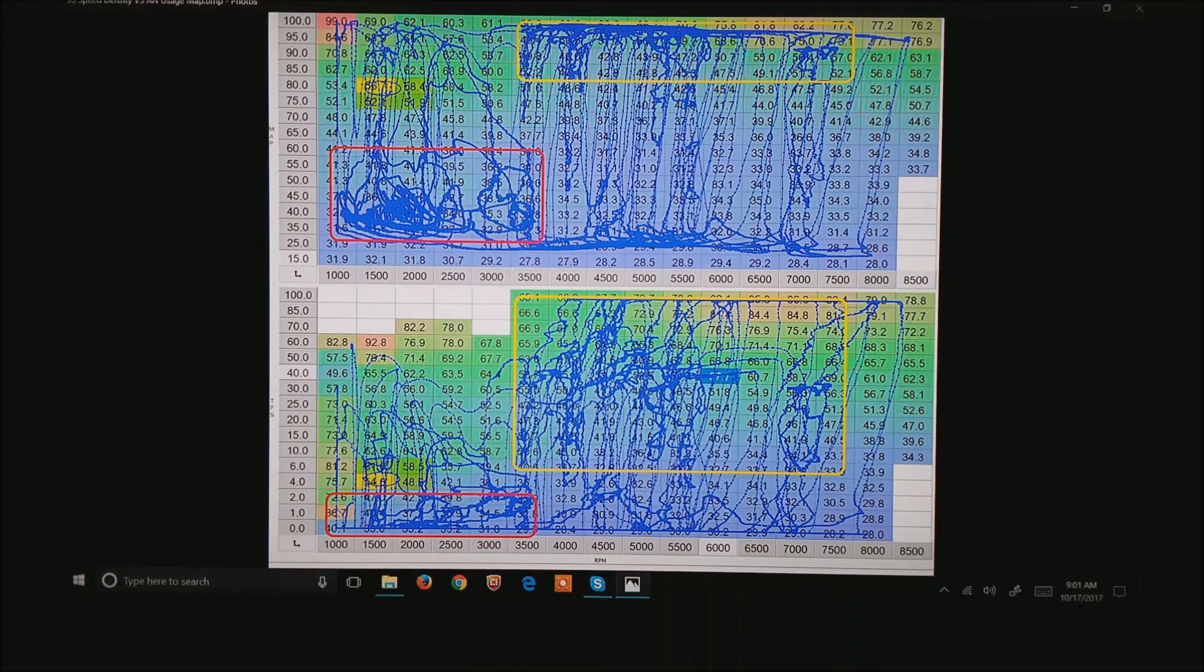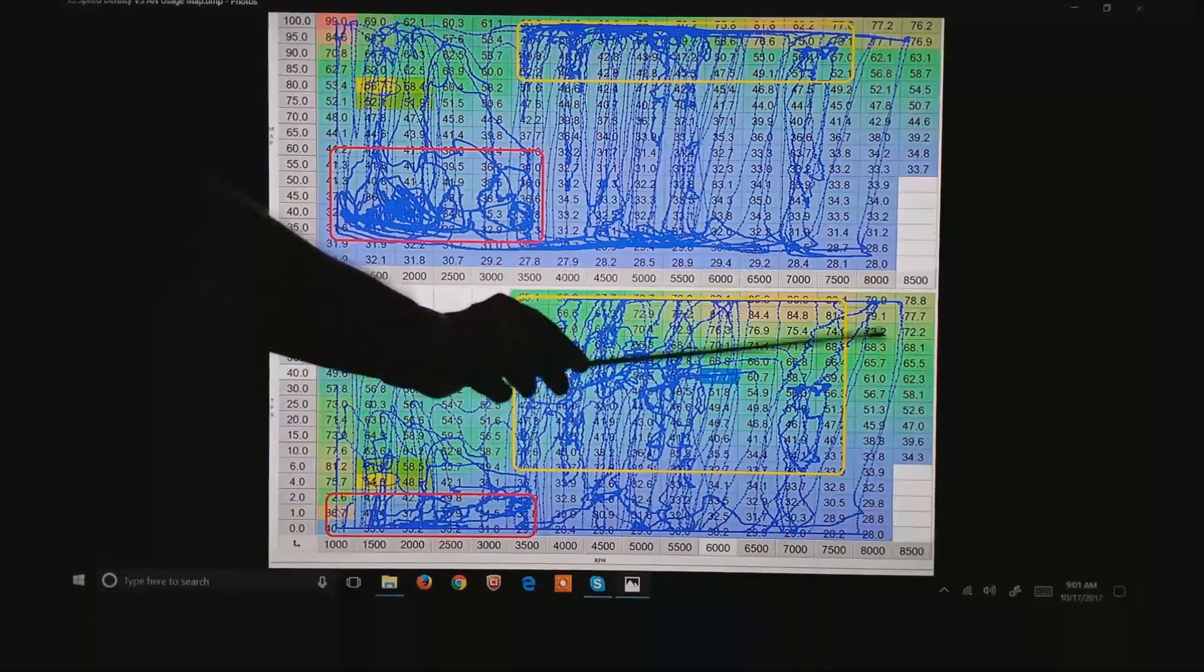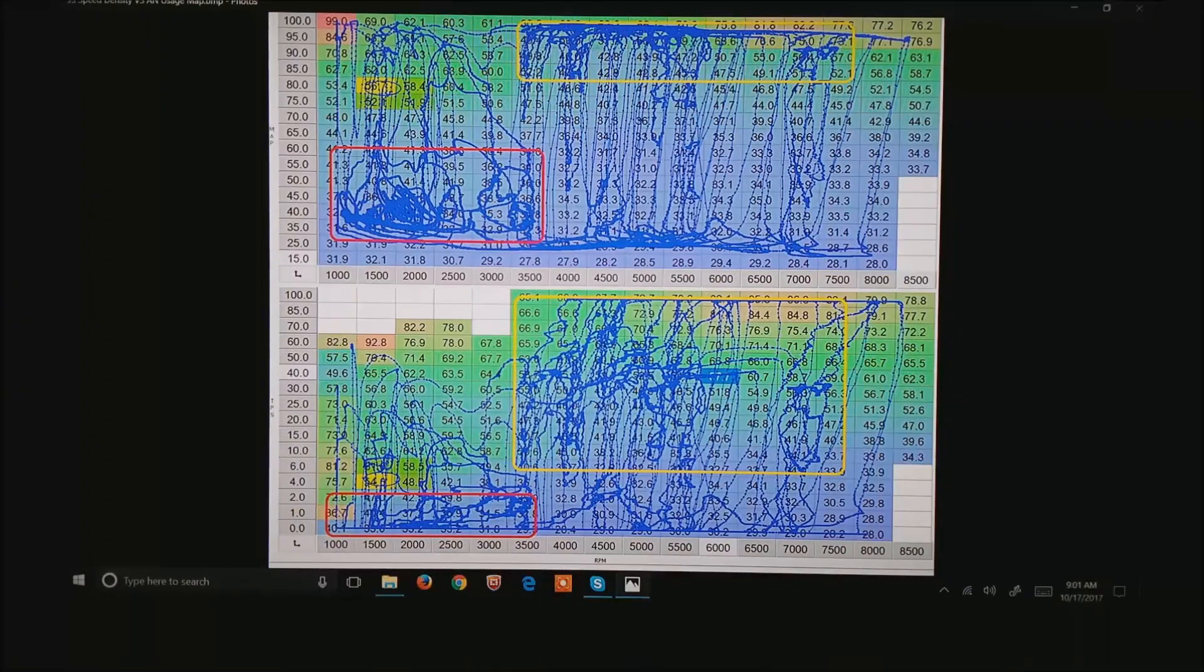But notice when we start getting higher in the power range, as in yellow, the yellow boxes, a speed density system has most of the power happening again in about 20 cells. But if you were to tune the motor with TPS based, you'd maybe have 100 cells or so.